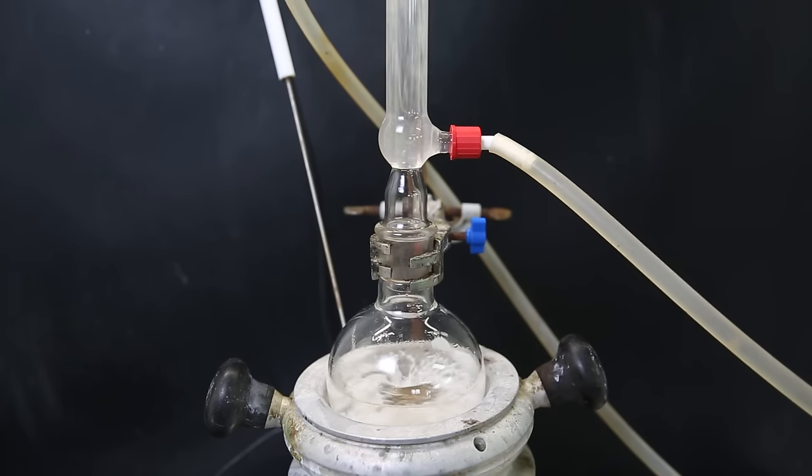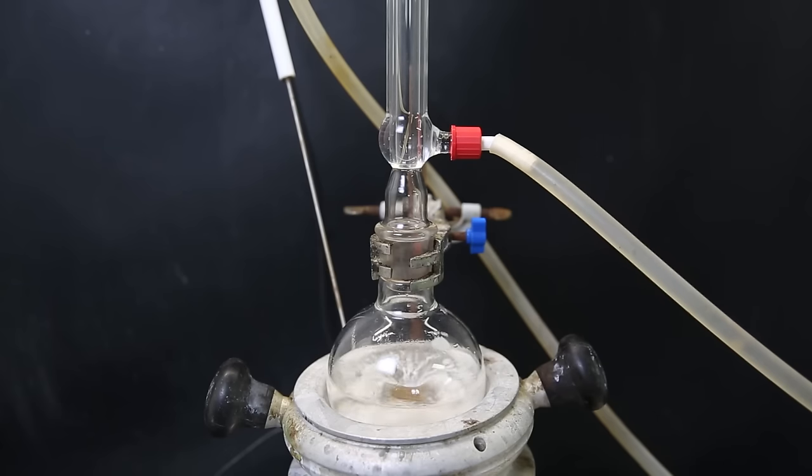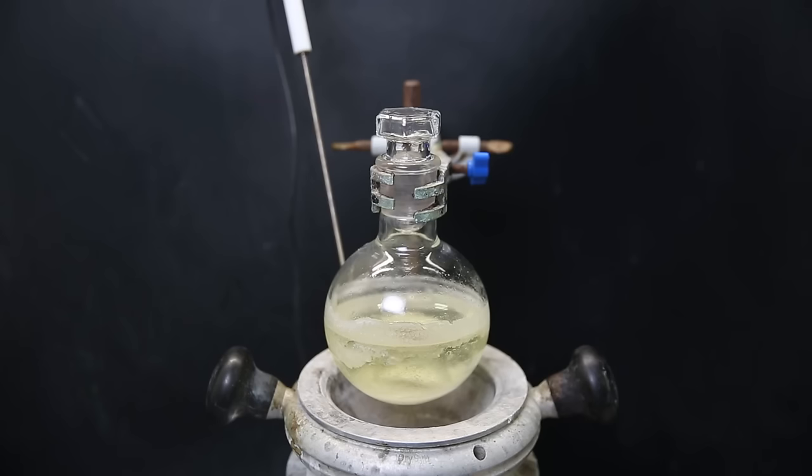I replace the stir bar to make it stir better, and then set it up for a reflux. In this reaction, 2 of the ditosylates react with 1 diamine to form 222-cryptand. The mechanism is basically the same as we have seen before when we made the azide. The amine attacks the carbon adjacent to the tosylate, and the tosylate is kicked off. The only difference is that this time, it has to be deprotonated by the sodium carbonate. I left it to reflux for about 4 days, and when it was done, it had become yellow.